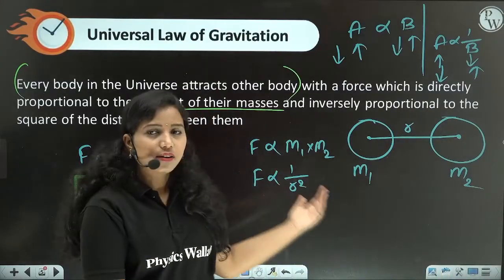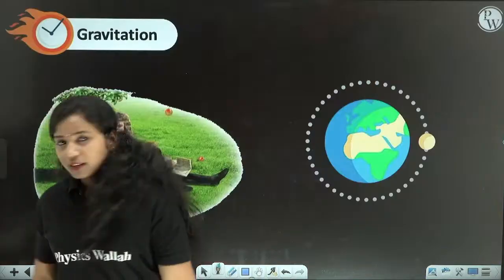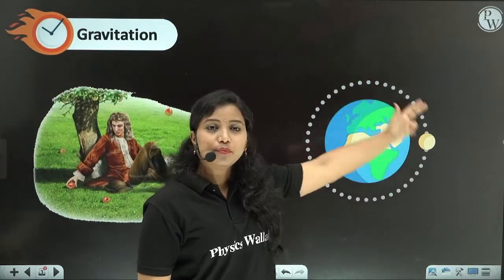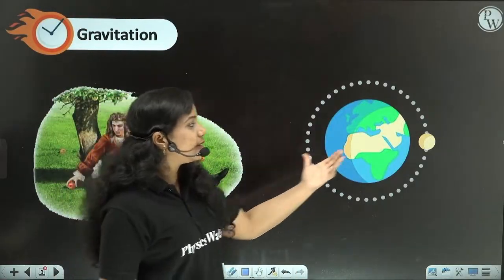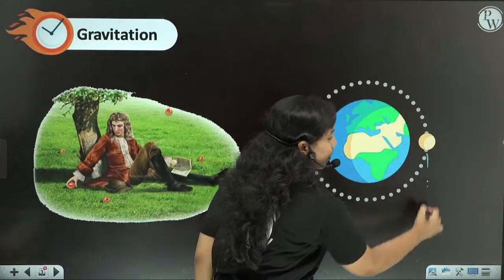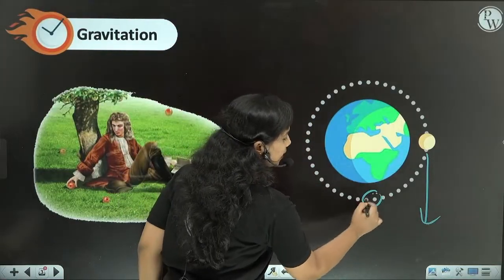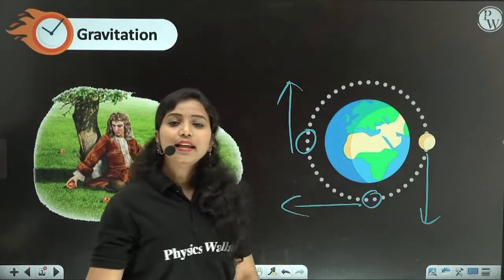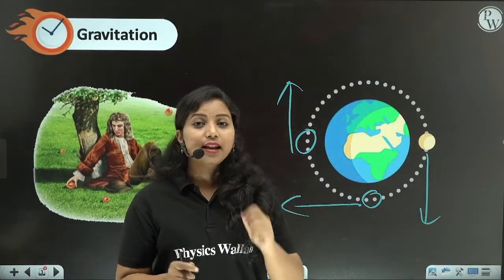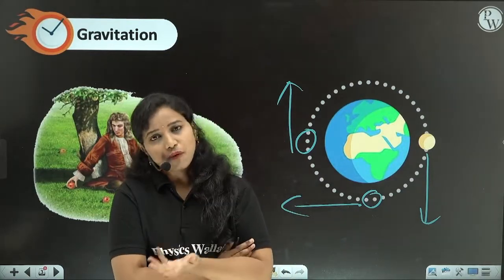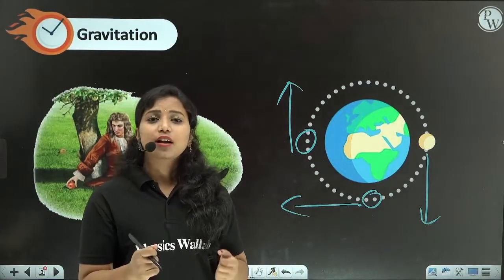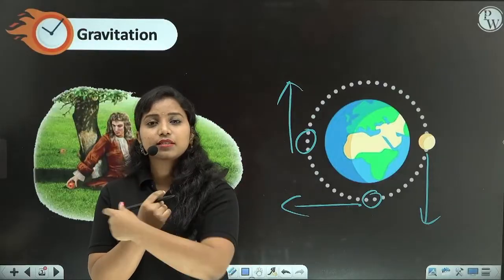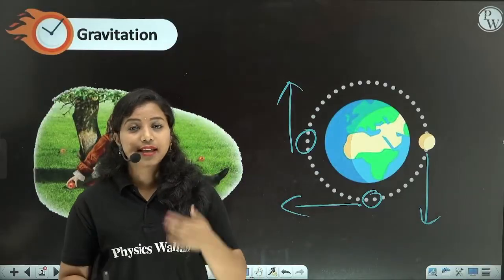Earth is one object, and the moon is another — the letters are assigned for each. The gravitational force acts between them. There are other forces too, but the main one is gravitational force. For an object moving in circular motion, a centripetal force is needed. So for the moon orbiting Earth, the gravitational force acts as the centripetal force.